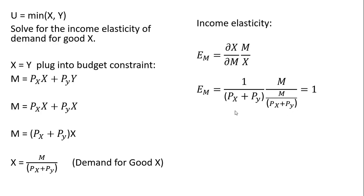And what happens here is things nicely cancel. The price terms here are going to cancel. The income terms, m terms, will cancel. And we have an income elasticity equal to 1. I hope you found this video helpful.